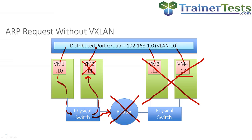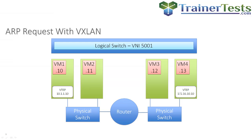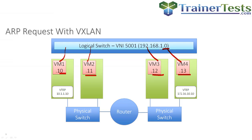Now let's look at the same diagram, but replace the distributed port group with a logical switch. VM1, VM2, VM3, and VM4 are all in the same network — 192.168.1.10, 11, 12, and 13. VM1 wants to ping VM4, but again VM1 doesn't know the destination MAC. It knows the IP address, but not the destination MAC, so VM1 will issue a broadcast ARP request. That ARP request is going to hit the VTEP.